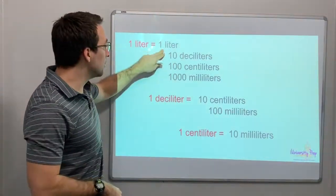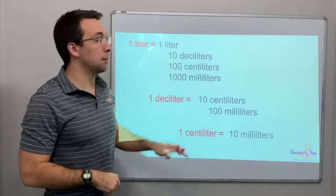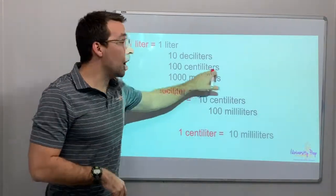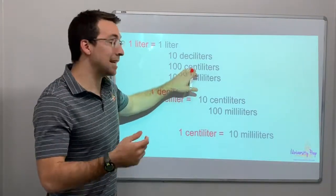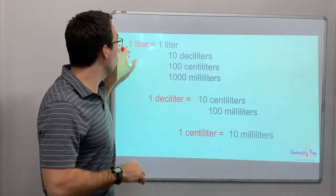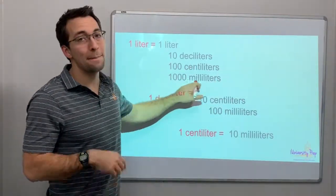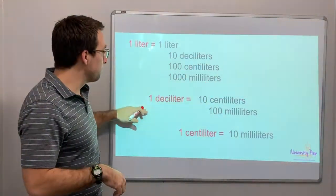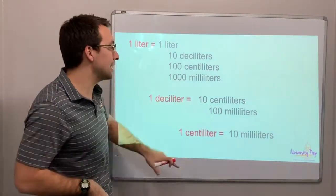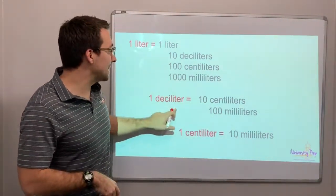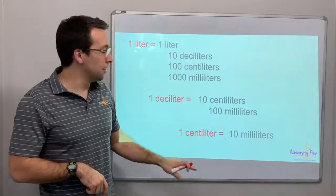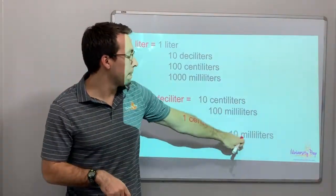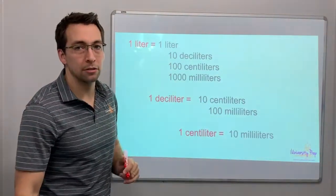So one liter is 10 deciliters. One liter is 100 centiliters, right? A hundred cents in a dollar. Should remember that. One liter is 1,000 milliliters. And again, one deciliter is 10 centiliters. One deciliter is 100 milliliters. One centiliter is 10 milliliters.